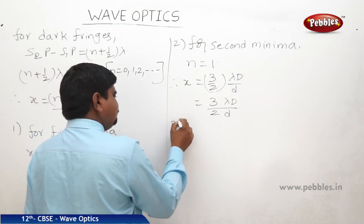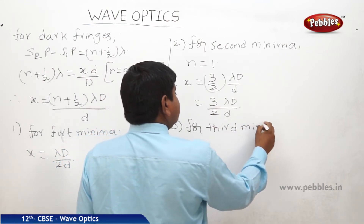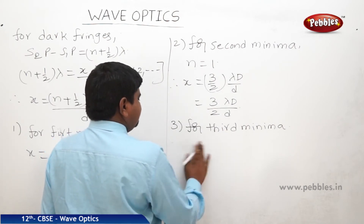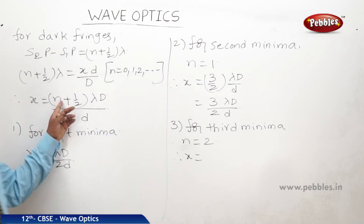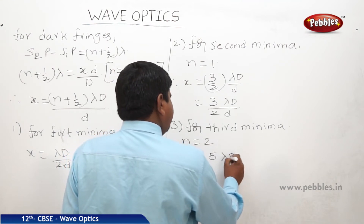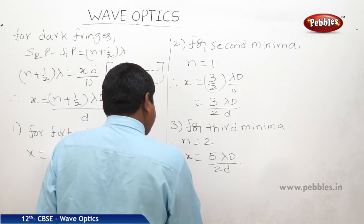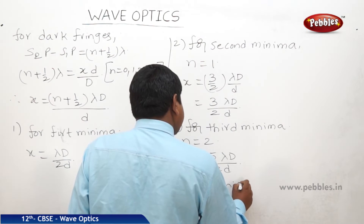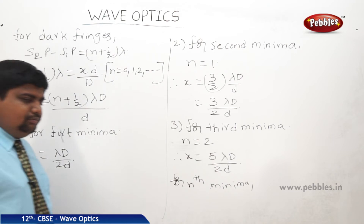For the third minima, n is equal to 2, and 2 plus one-half is 5 by 2, therefore x is equal to 5 lambda D by 2d. For the nth minima, it is n plus one-half into lambda D by D.